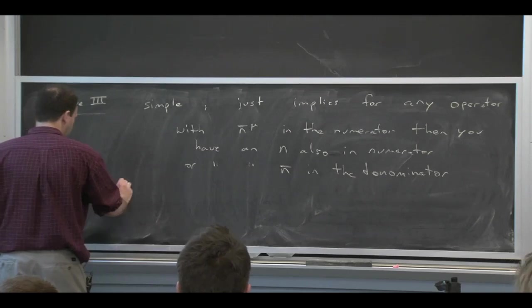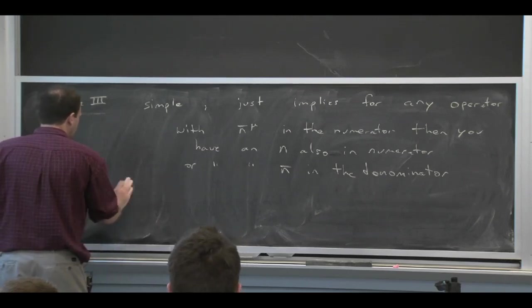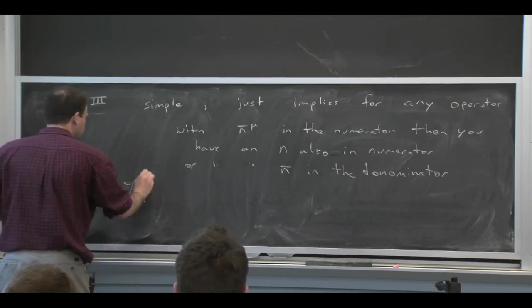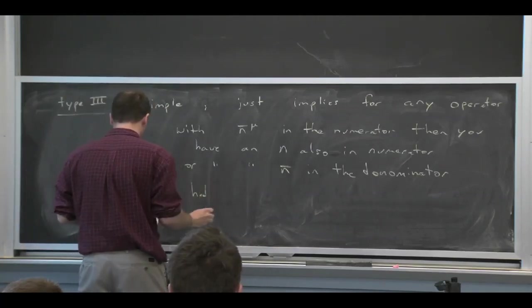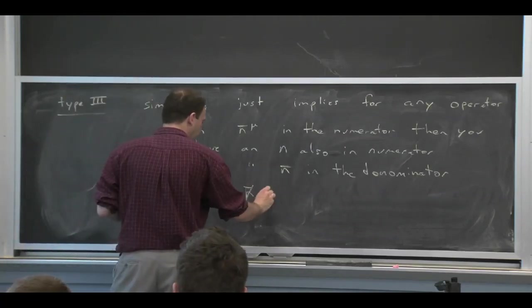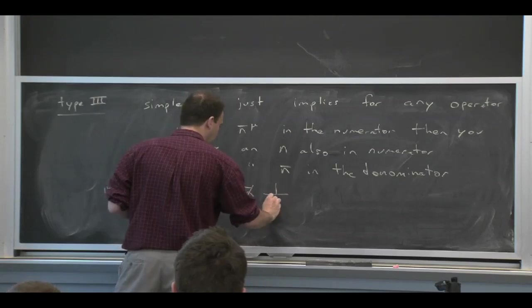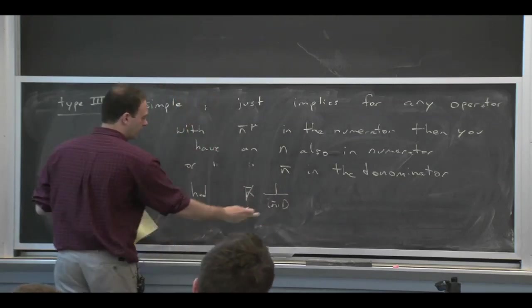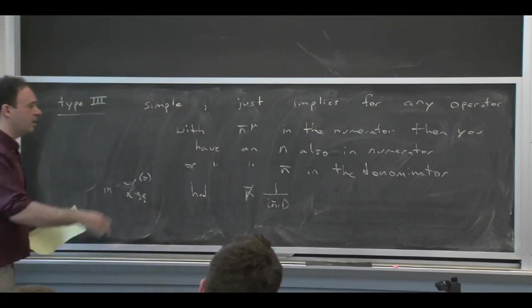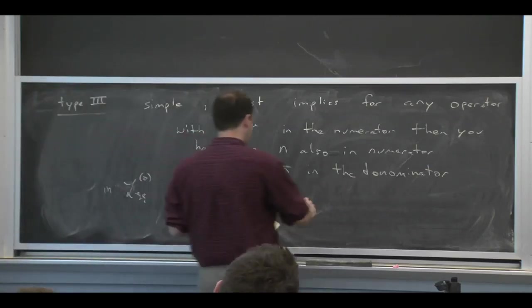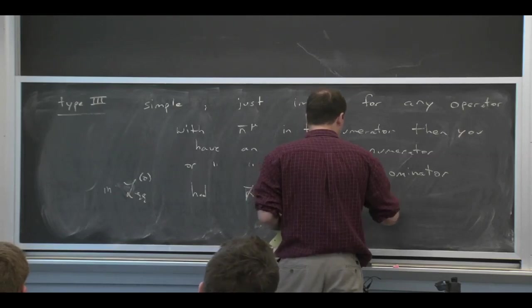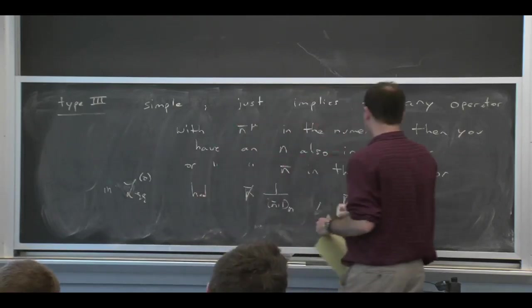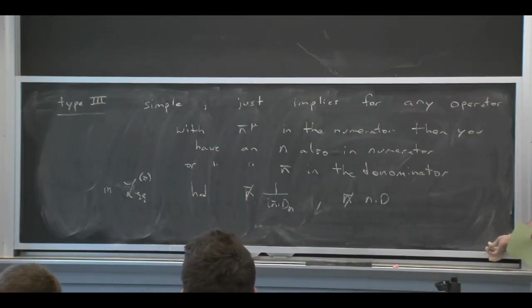So if you look at our LC0, we had various terms. One of them was n bar slash one over i n bar dot d. So here we have an n bar in both the numerator and the denominator, and that compensates for the transformation. And then in another term, we had an n bar slash n dot d. And that, again, is invariant under this type of transformation.